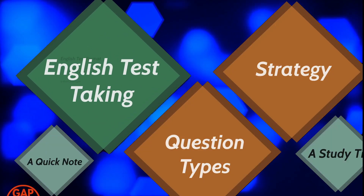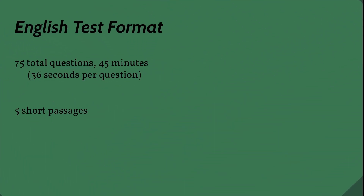So, the format of the English section: 75 questions in 45 minutes. It's a fast test. That comes out to around 36 seconds per question, which is the least time per question of any of the sections on the ACT.